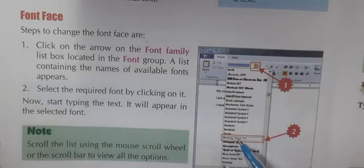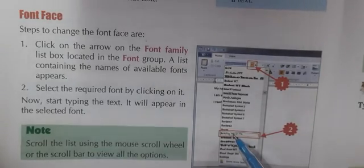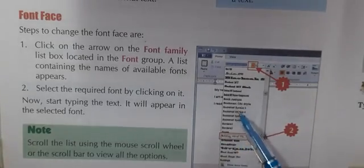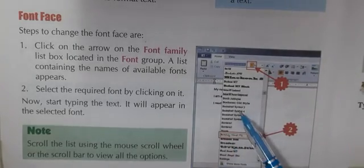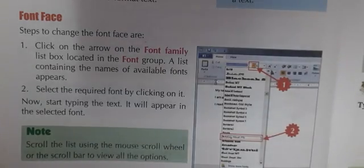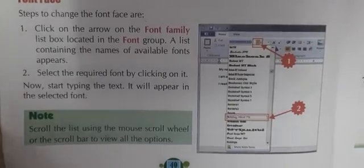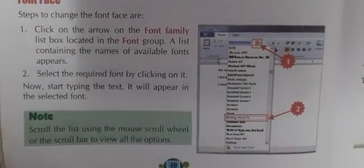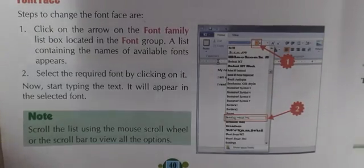You can see here the font place from where we can change the font face or font type. So first we will click on the Home tab, then in the font group we will click on the font family. As soon as we click on the drop-down arrow, a list of different font faces or font types will appear on the screen. We can select any style by clicking with the mouse — left click. After that, we can start typing. This is how we can change the font face.